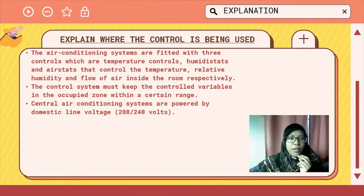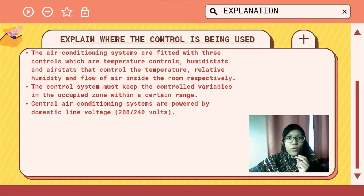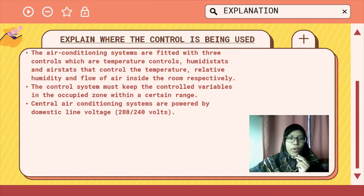An explanation of where the control is being used. The air conditioning system is fitted with three controls which are temperature controls, humidistats, and airstats that control the temperature, relative humidity, and flow of air inside the room respectively. The control system must keep the control variables in the occupied zone within a certain range. Central air conditioning systems are powered by domestic line voltage, 208 to 240 volts.